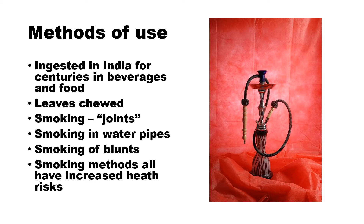Recently we've seen a trend of smoking blunts. Blunts are cigar wrappers — sometimes cigars cut open with the tobacco replaced by marijuana — so they're the equivalent of smoking a marijuana cigar. All smoking methods have increased health risks. In the medical marijuana field we also see edibles, in which the marijuana is placed into food. It is the smoking that harms the lungs by placing tar into them, and the tar from marijuana is more of a carcinogen than the tar from tobacco.